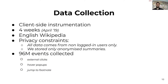To answer this question, we used data collected for four weeks in April 2019. We developed a client-side instrumentation to capture different types of events and to understand how readers interact with the page. The data collection is limited to the English edition of Wikipedia, and to preserve the privacy of readers, we dropped all sensitive information and included only anonymous users, who in the case of Wikipedia are the vast majority. In total, we collected 96 million events generated by different types of interaction with the pages, such as external clicks, pop-ups, and jumps to footnotes.